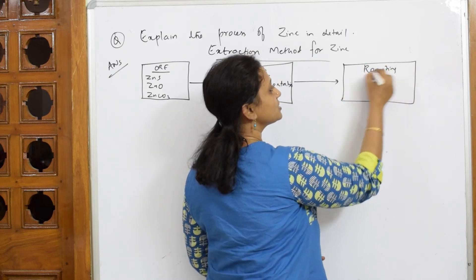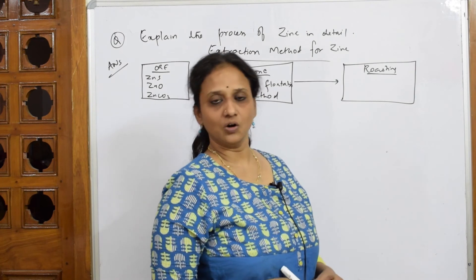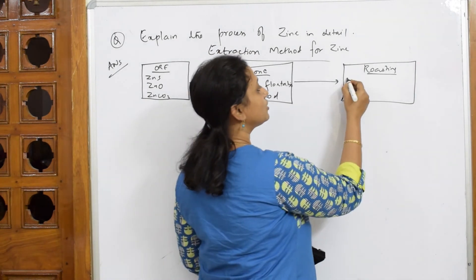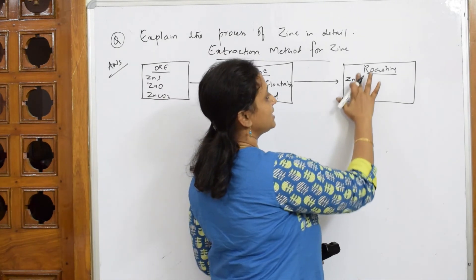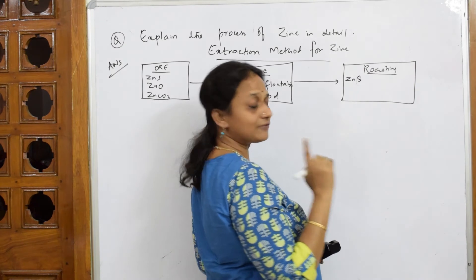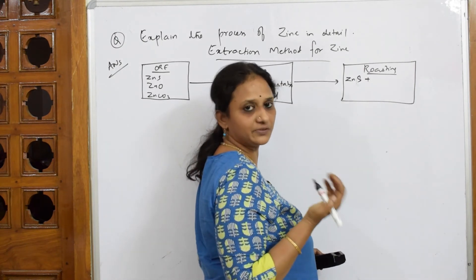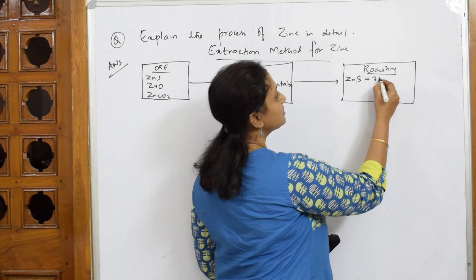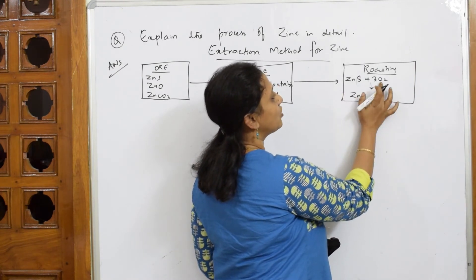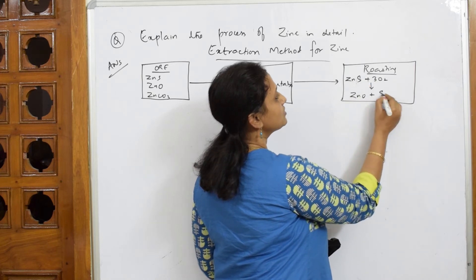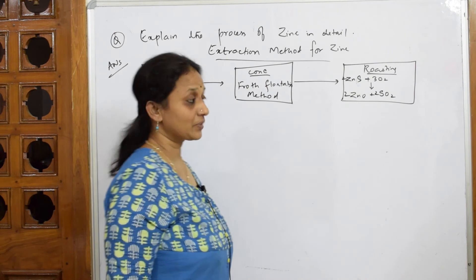In roasting, sulfide ores are converted to oxide ores. We take zinc sulfide (ZnS) and roast it with two moles or three moles of oxygen. We have already done this. If I take three moles of oxygen, I get zinc oxide (ZnO) and sulfur dioxide (SO₂). We write the definition of roasting as well. This is the balanced reaction we already completed.